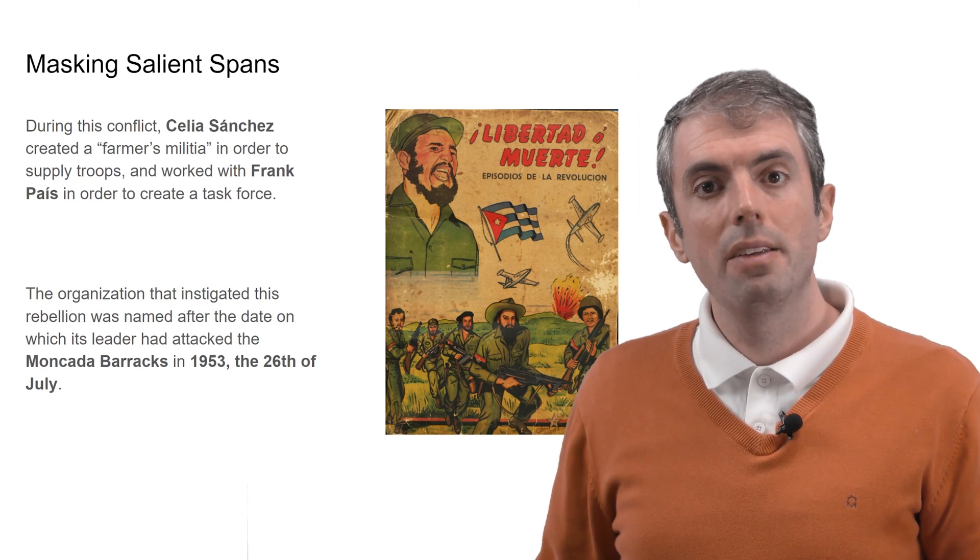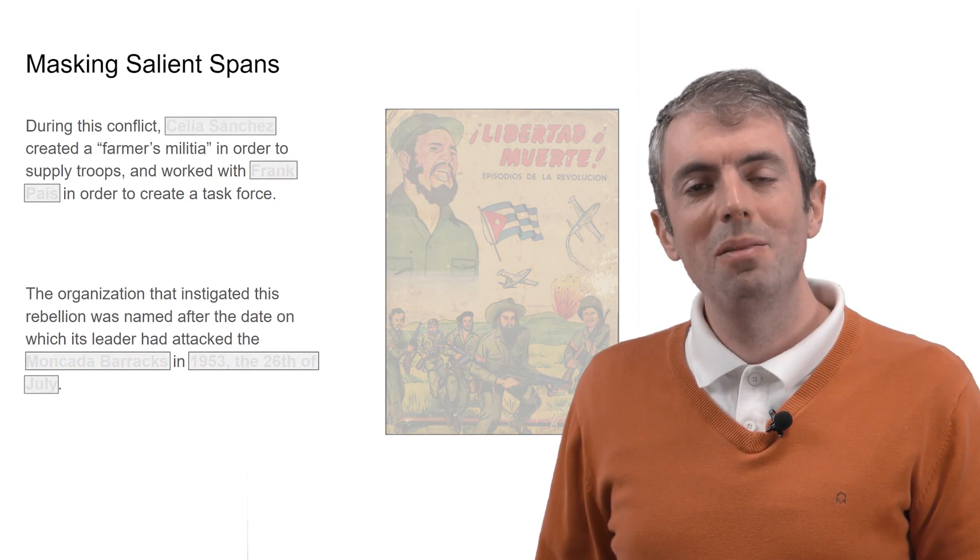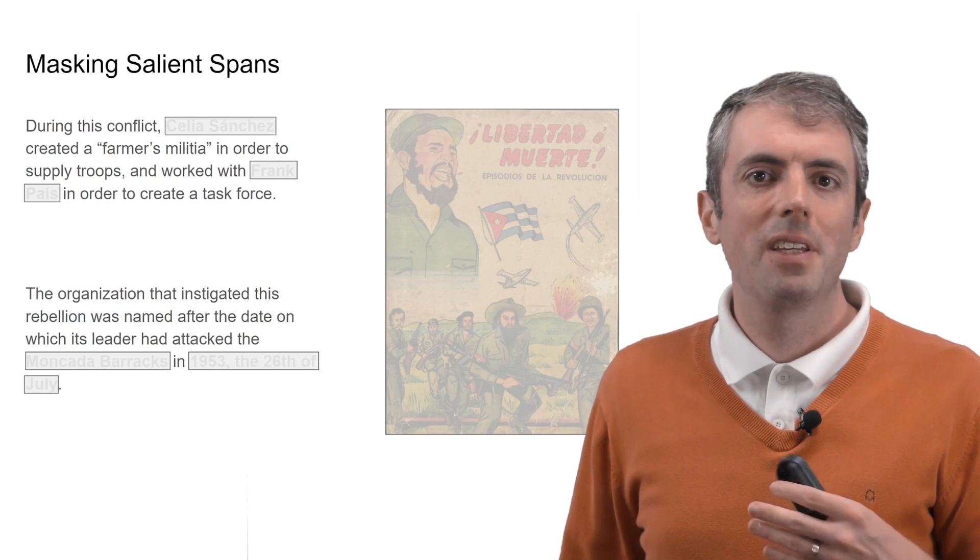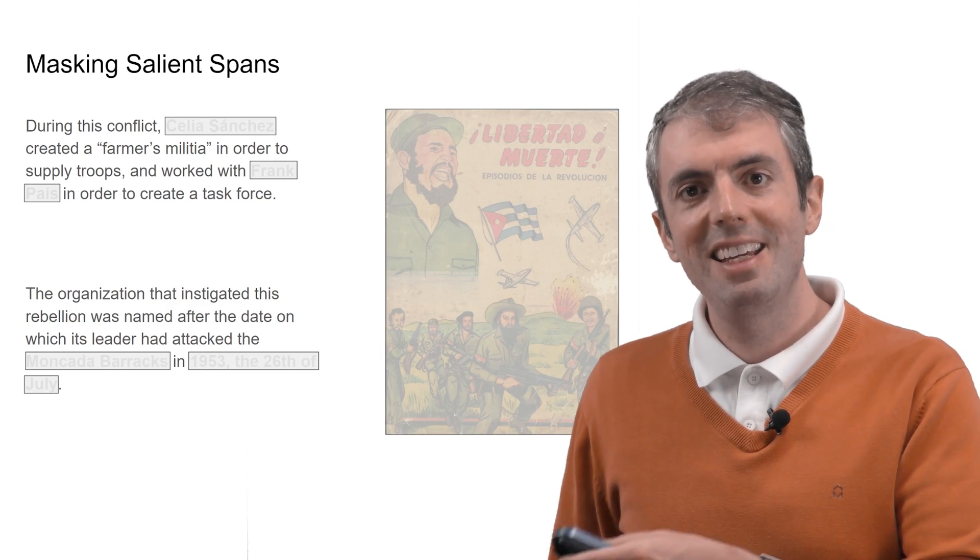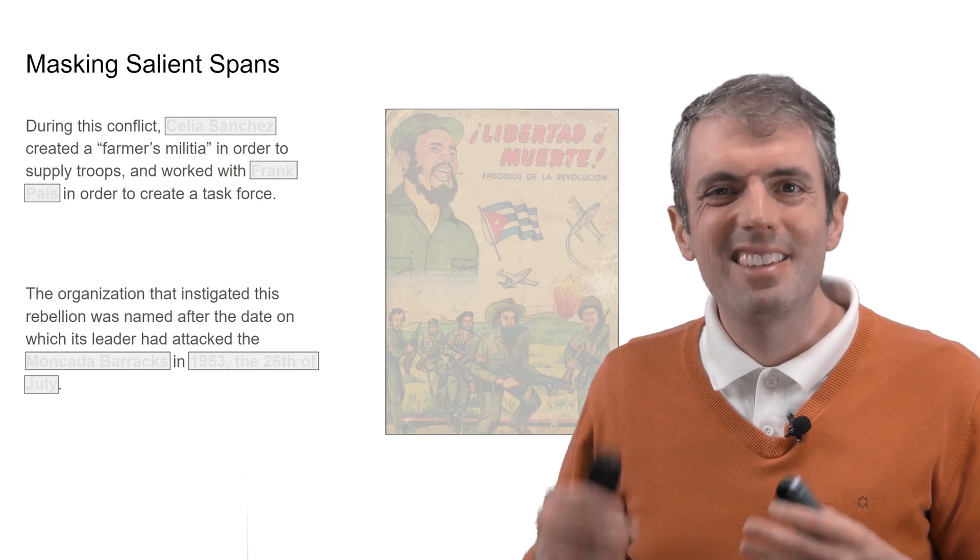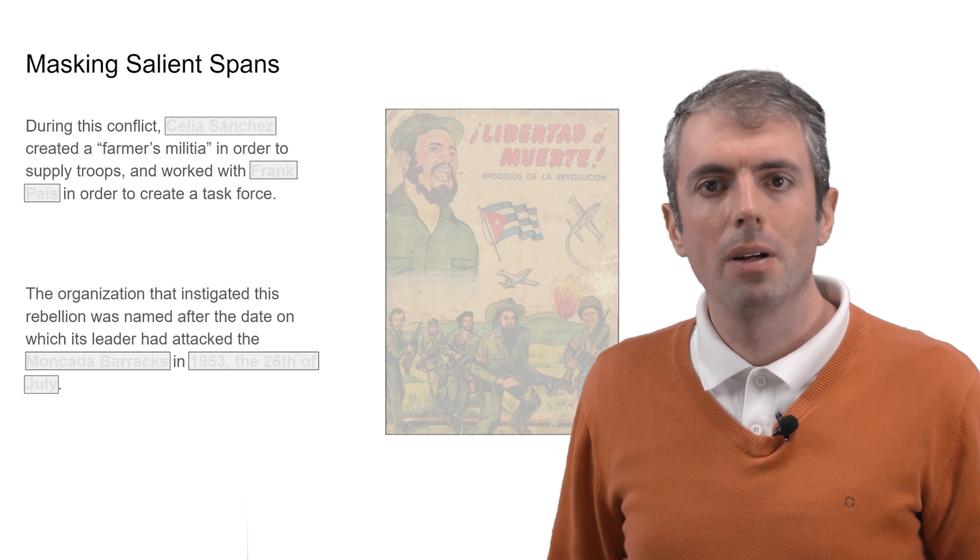Realm argues that if you mask these tokens, rather than a random 15% of tokens, you get encoders that do a better job of keeping track of where entities start and end. When your job is to highlight entities in a passage, this entity-focused pre-training gets you better representations.